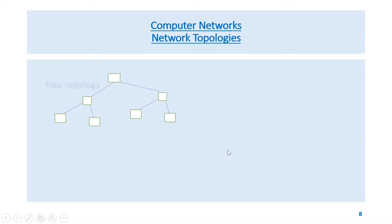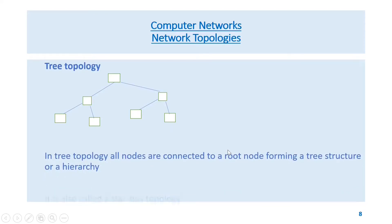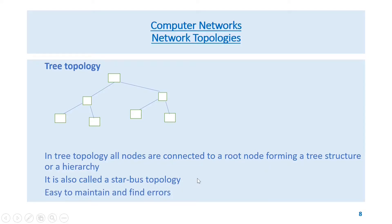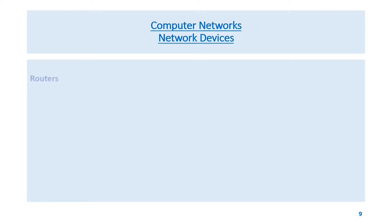In tree topology, all nodes are connected to a root node forming a tree structure or hierarchy. It is also called a star-bus topology and it is easy to maintain and find errors.